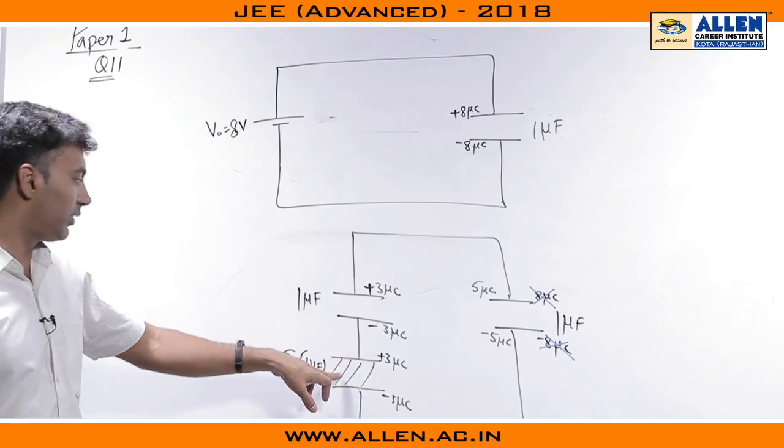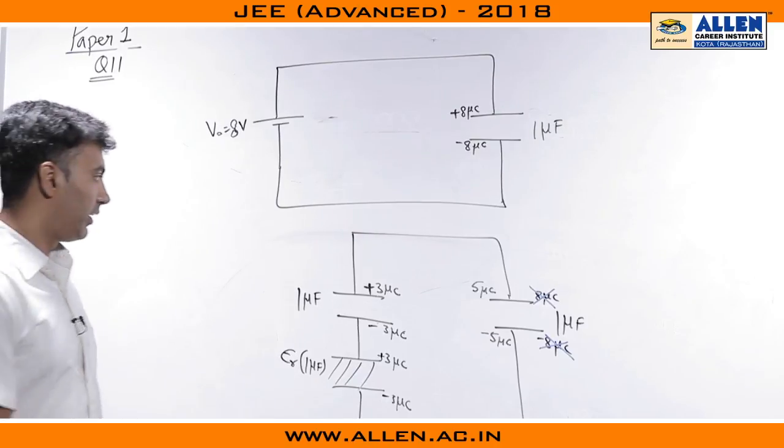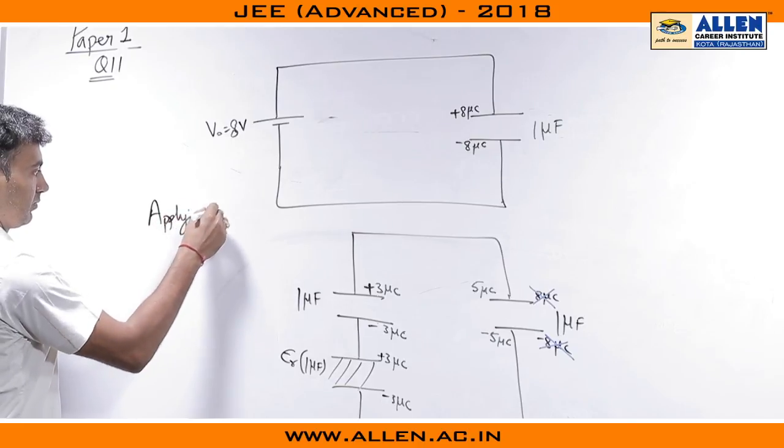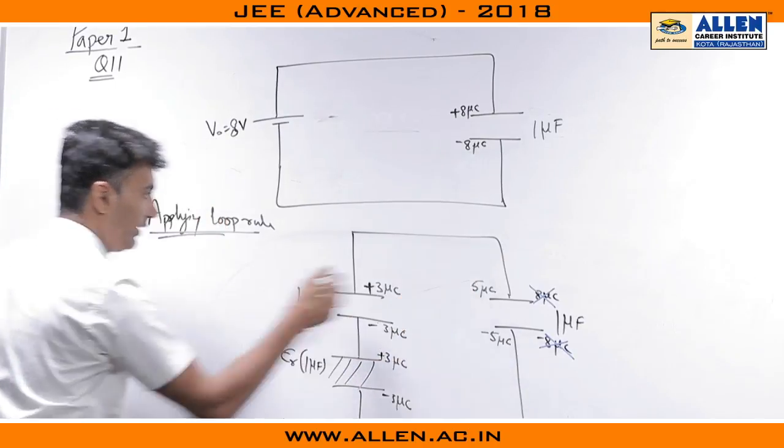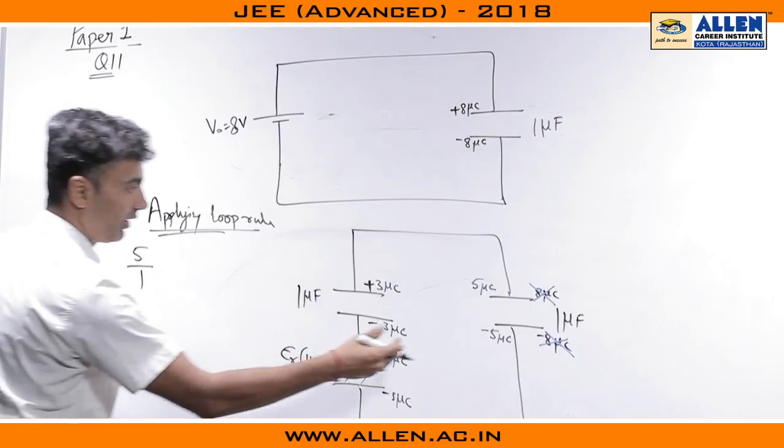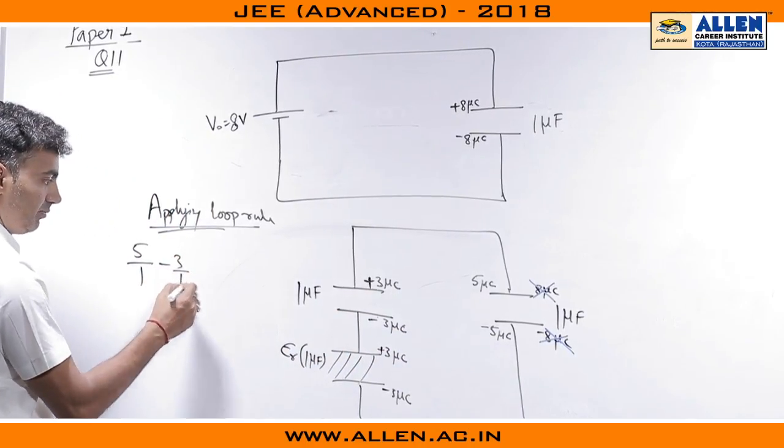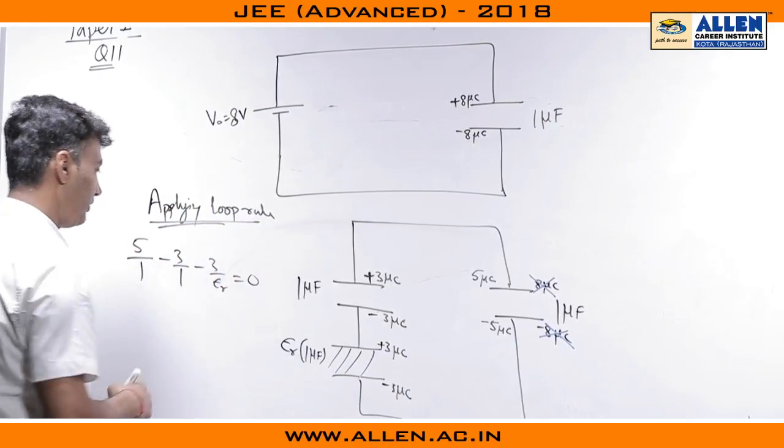Now, since the dielectric was filled in, the original capacitance was 1, the new capacitance would be epsilon r into 1. Applying loop rule, this is what we get. We go like this: 5 by 1, that is the potential change that happens, a drop of minus 3 by 1, another drop of 3 by epsilon r equals 0.